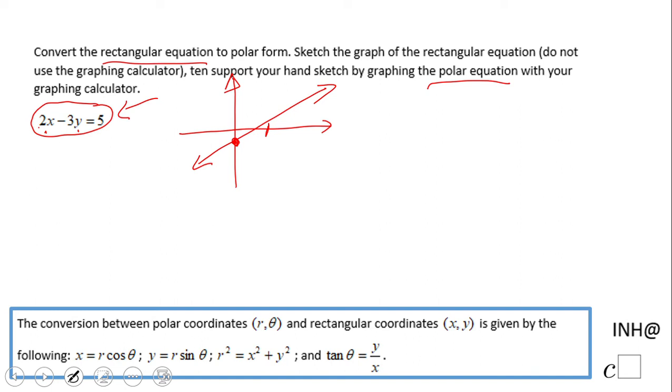But now let's go and see how we do the polar equation. For that reason, we use these two formulas we have here, and we're gonna have 2 times r cosine of theta minus 3 times